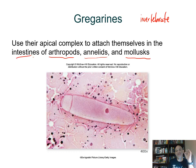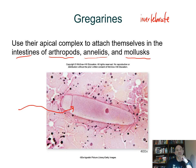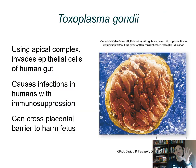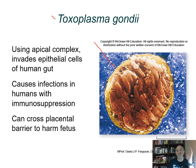There are also Gregorines shown here — an image of one of these parasites or Gregorines, with the apical complex shown. These parasites are shown in a group in intestinal tissues.